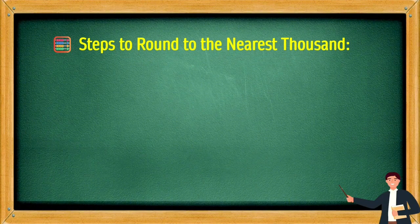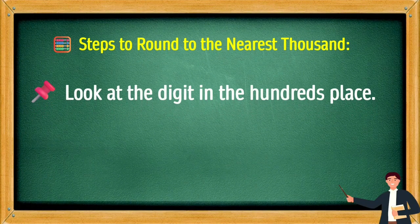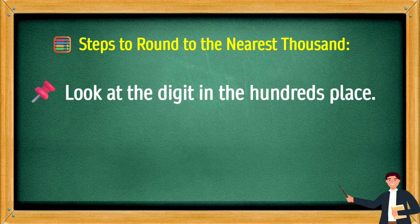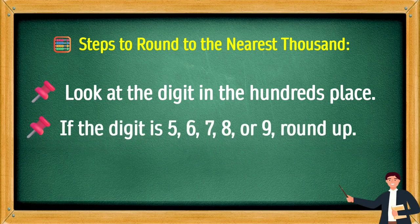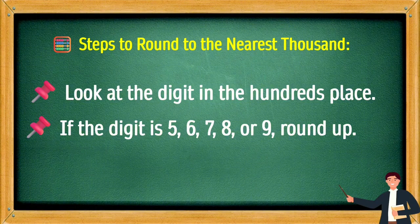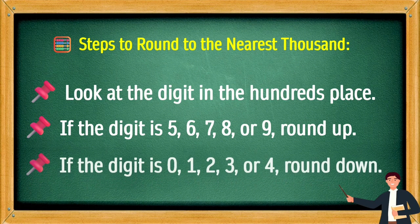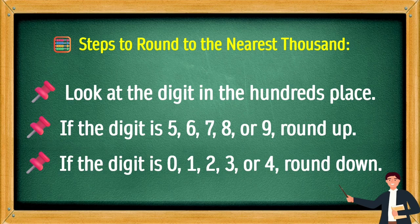Steps to round to the nearest thousand: Look at the digit in the hundreds place. If the digit is 5, 6, 7, 8, or 9, round up. If the digit is 0, 1, 2, 3, or 4, round down.